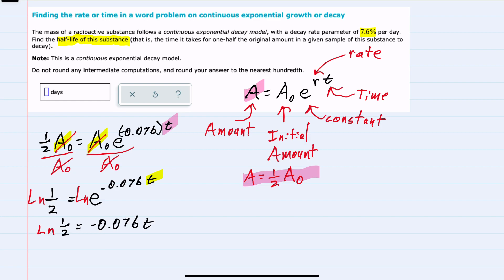Now that we have the t out of the exponent, we can finish solving for t by dividing both sides by negative 0.076. Now that we have isolated t, I can plug this expression into a calculator like Desmos to avoid intermediate computations.